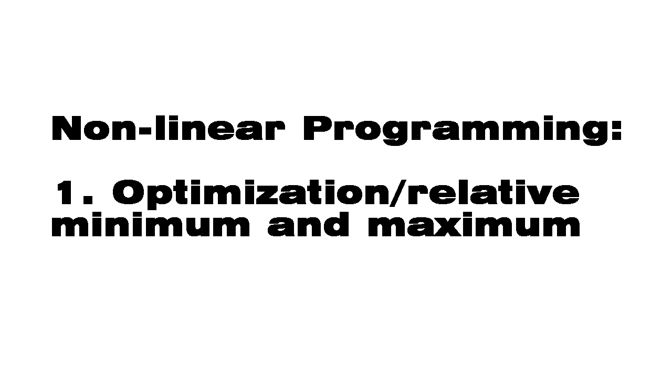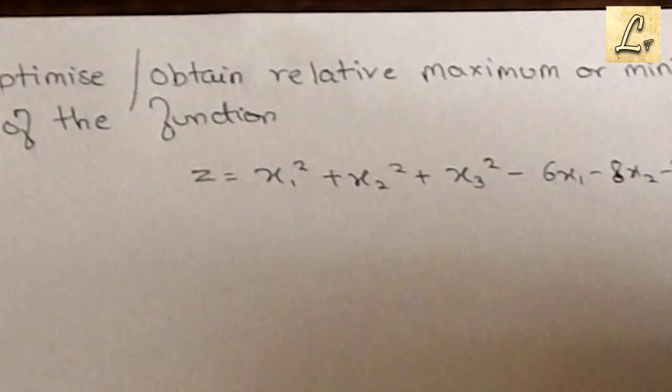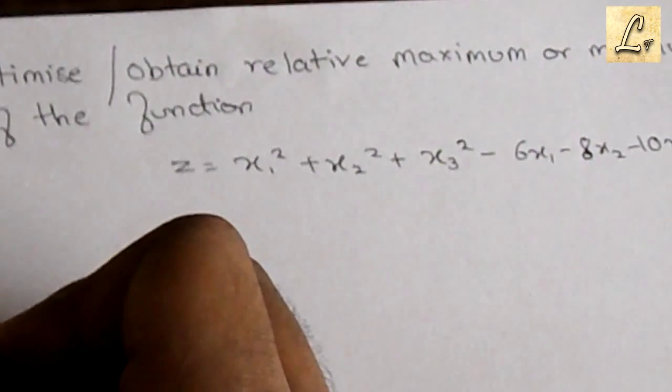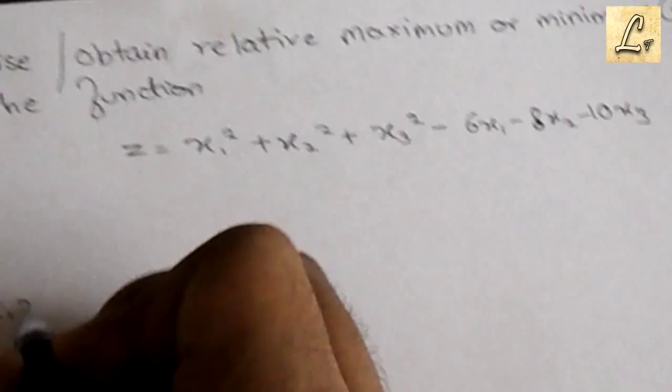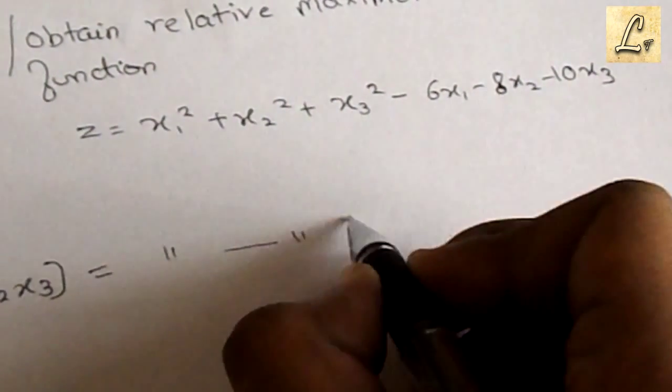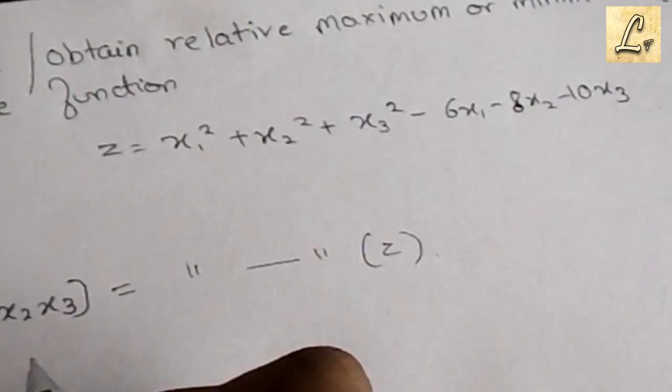This is a nonlinear programming optimization problem to find relative minima or maxima. We have an equation with three different variables: x1, x2, and x3. We'll make a function and write the equation down.